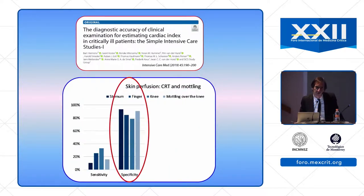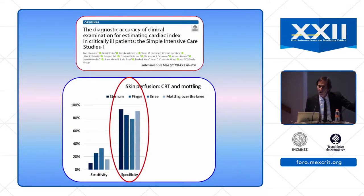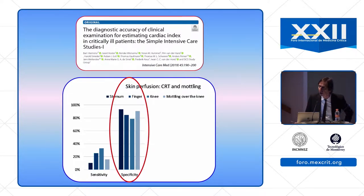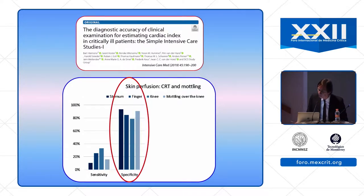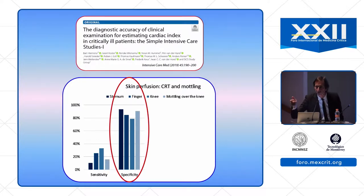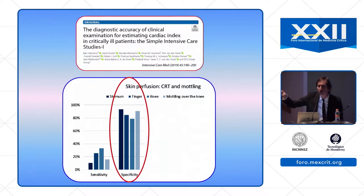The p-value was 0.06, which was not significant, but this paper emphasizes the importance of clinical examination. Another paper also emphasized the importance of skin perfusion markers, published in 2019 in ICM, looking at mottling and capillary refill time to predict low cardiac output in patients with shock. They found that sensitivity was not good but specificity was good.